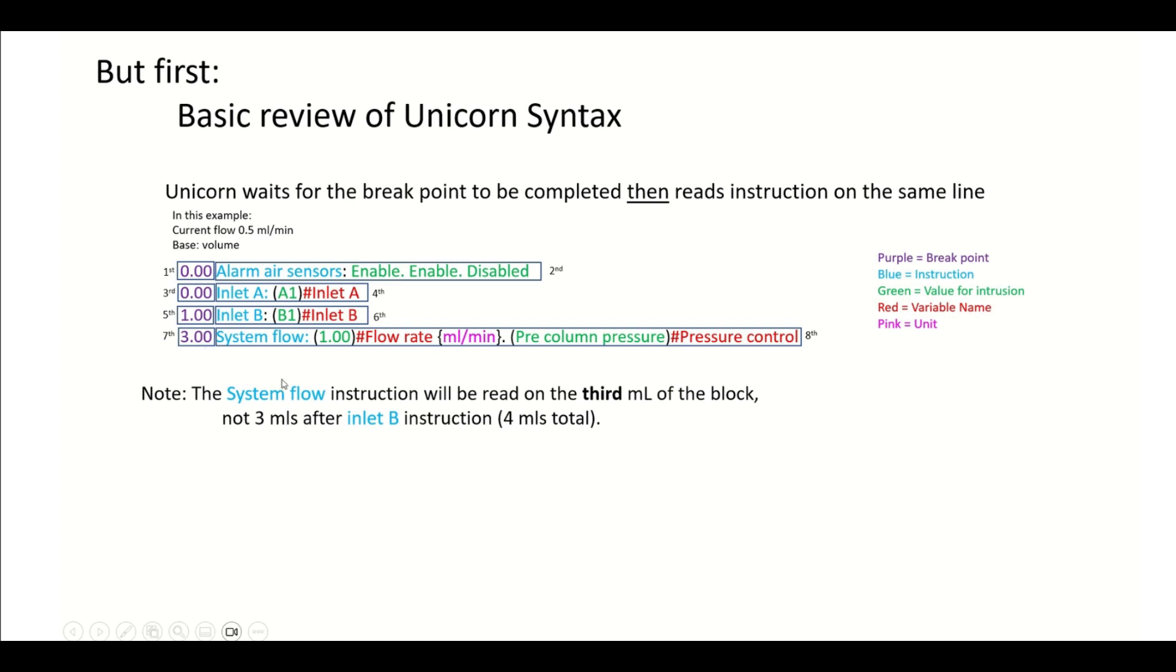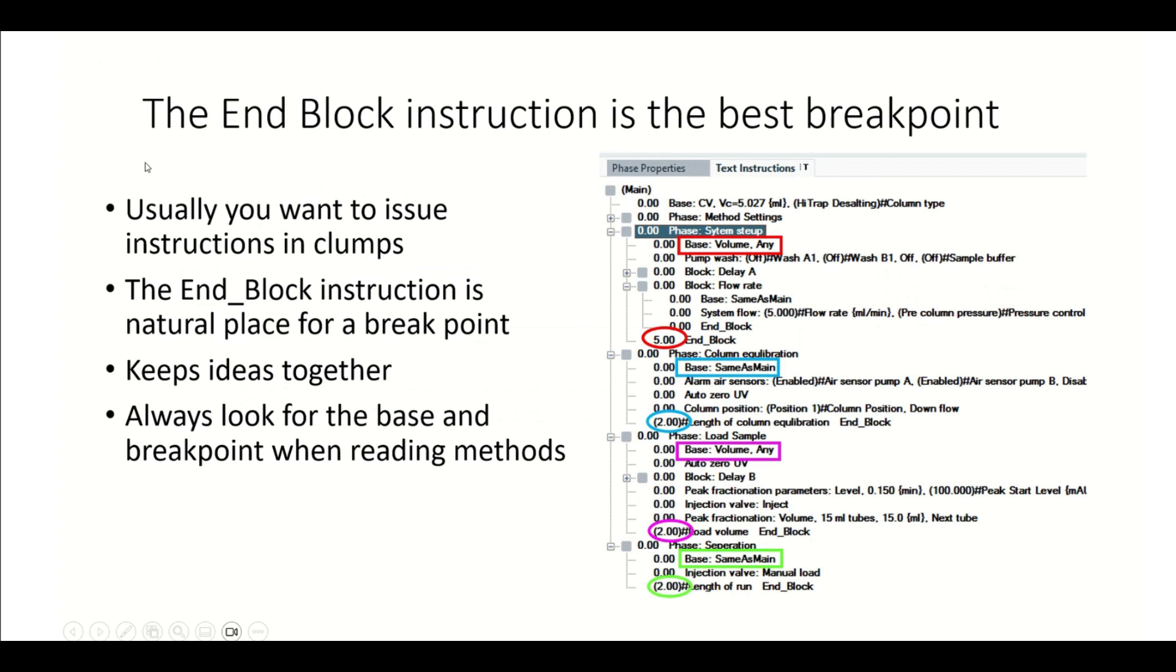Now that we understand that about the unicorn syntax, I want to tell you that the nBlock instruction really is the best breakpoint instruction to use. That's because usually we want to issue instructions in unicorn in a series of clumps, and we do that because it basically just keeps ideas together. nBlock instruction is the natural place to put a breakpoint. If we look at this load sample phase, if the volume is any, we have basically two, because we've got the delay there, three, four, five instructions. They're all going to kind of happen together. That's because we're getting ready to load the sample beyond that delay. We kind of always want to look for these instructions, like the base and the nBlock, try to focus on these things as we narrow down on the method and try to figure out what's going on inside of it.